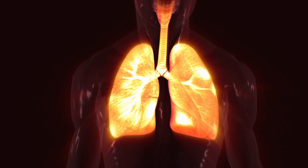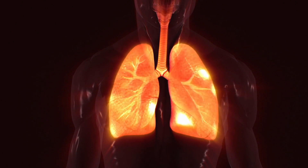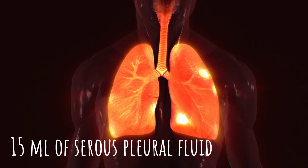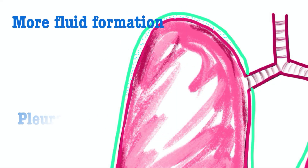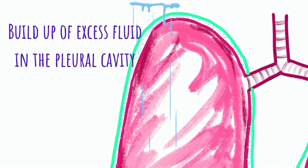Physiologically, the pleural cavity normally contains approximately 15 milliliters of serous pleural fluid. But if there's any process which results in more fluid formation, this will produce a pleural effusion. Pleural effusion is the buildup of excess fluid in the pleural cavity.